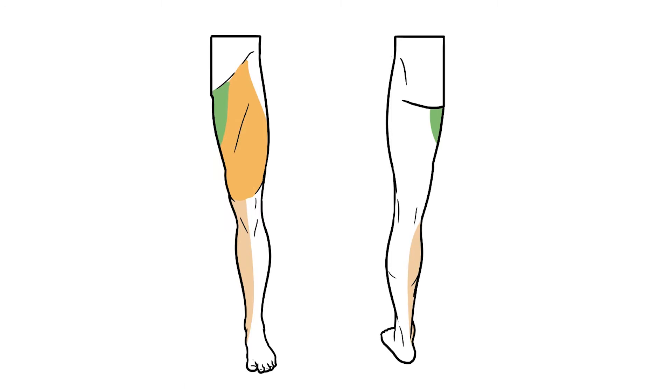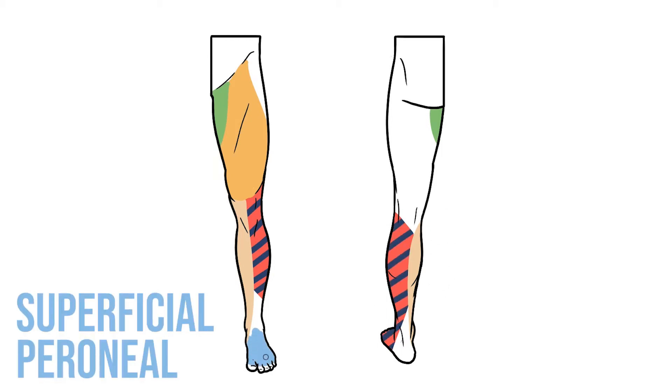Posteriorly, the sciatic nerve doesn't have any direct sensory supply, but its branches go on to innervate the rest of the skin below the knee. So approximately the posterior and lateral leg is supplied by the sural nerve. The superficial peroneal nerve supplies the dorsum of the foot, whilst the tibial nerve supplies the heel and the sole of the foot via its plantar branches. Finally, the deep peroneal nerve innervates the skin of the first webspace between the first and second digits.